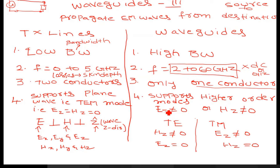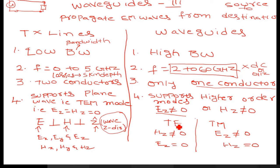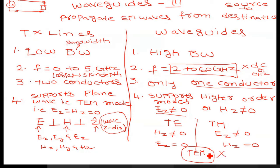In order to support higher order modes, either EZ or HZ should be non-zero. In waveguides, we classify the modes into two types: transverse electric (TE) modes and transverse magnetic (TM) modes. TEM mode is not supported by waveguides — we will see why that is the case in coming classes. Waveguides support only TE and TM modes.